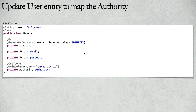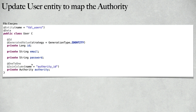The second step is to create a relationship between the User and Authority entities. Inside the User entity, we are going to create an authority field and add a one-to-one mapping. In a real-world application, every user has multiple authorities, but for simplicity, let's assume every user has a single authority. We will add the @OneToOne mapping and a @JoinColumn annotation with the column name authority_id, which is a foreign key to the authority table. Whenever we save a user, we will also save that user's authority.